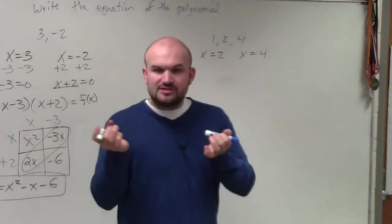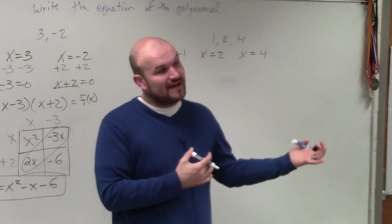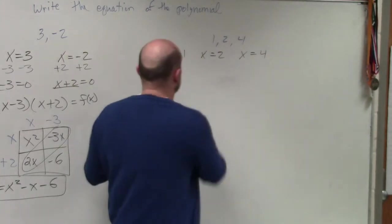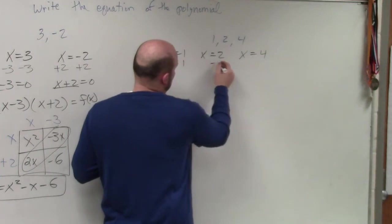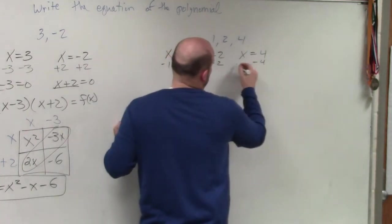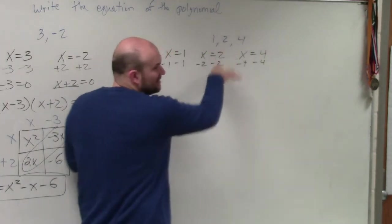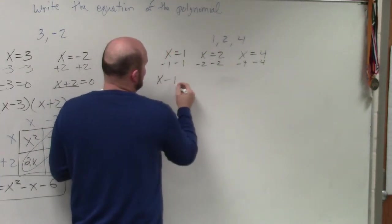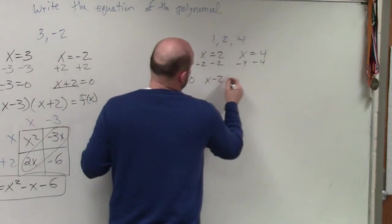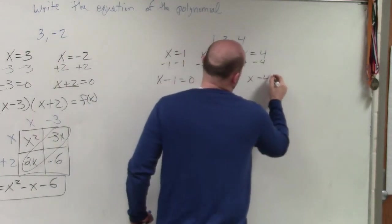Then you take those and you set them equal to 0, because those came from factors. Your zeros come from factors. So I write, subtract 1, subtract 1, subtract 2, subtract 2, subtract 4, subtract 4. So x minus 1 equals 0, x minus 2 equals 0, and x minus 4 equals 0. Right?